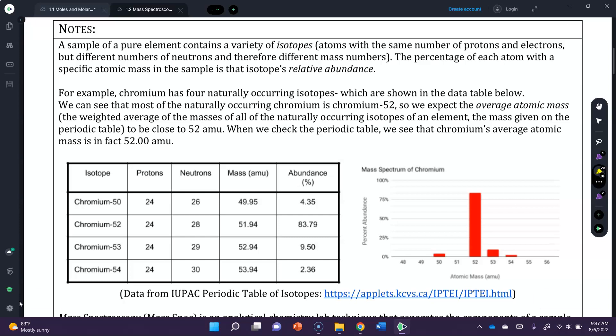A sample of a pure element contains a variety of isotopes, atoms with the same number of protons and electrons, but different numbers of neutrons and therefore different mass numbers. The percentage of each atom with a specific atomic mass in the sample is that isotope's relative abundance.